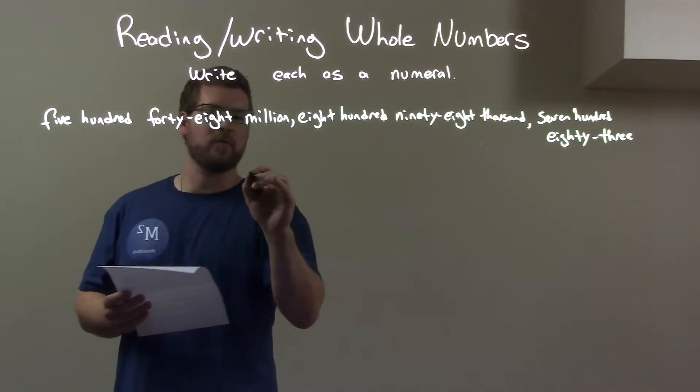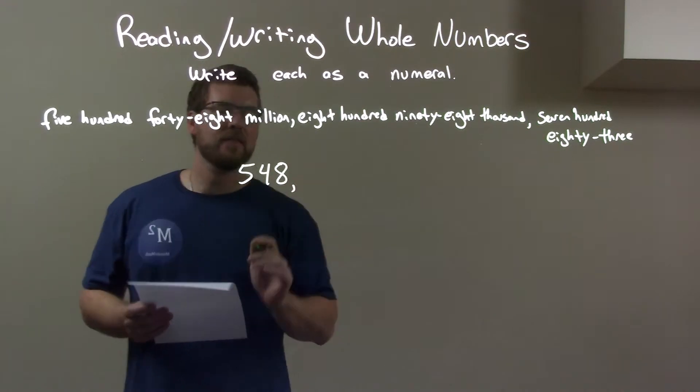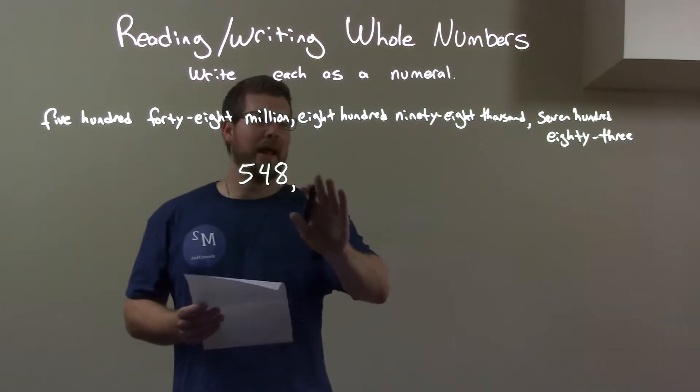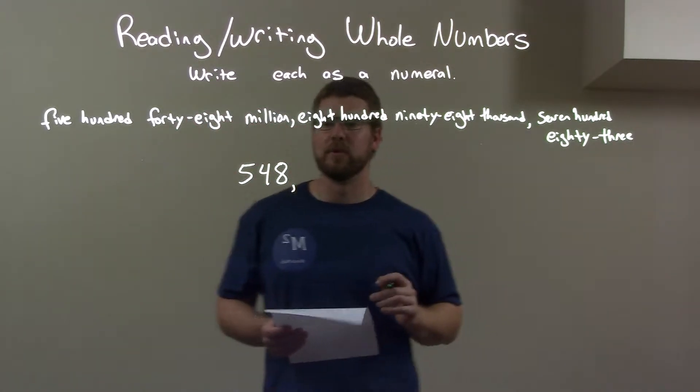So, that's pretty easy for us, right? Five hundred and forty-eight. Now, this is in the millions place, right? So, we're going to have six zeros afterwards.